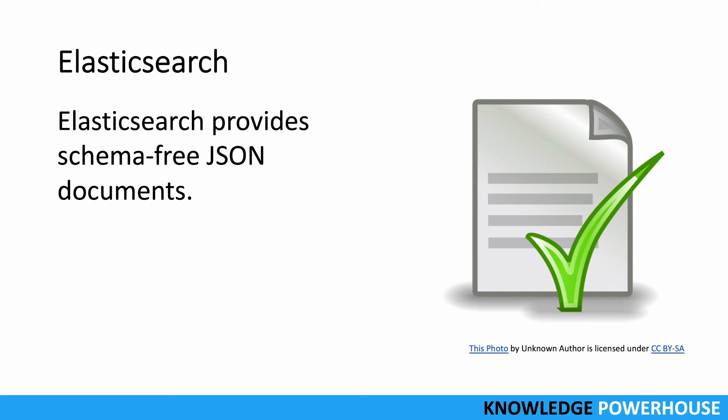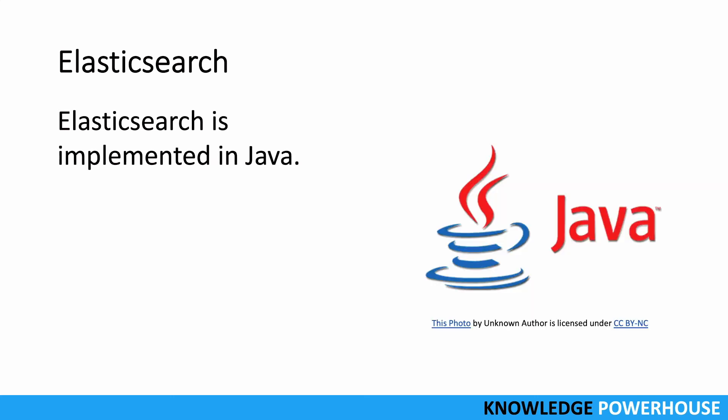Elasticsearch provides schema-free JSON documents, meaning there are not many strict rules applied, which enables much faster results. That is why Elasticsearch is very popular among most companies. Another reason for its popularity is Java — it is implemented in Java, which was one of the most popular languages in recent times, making it much easier to enhance or add features to Elasticsearch.